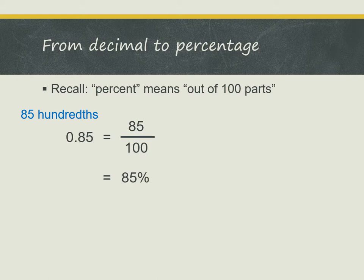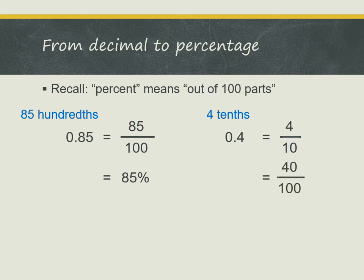Let's look at another example: 0.4. We can say 0.4 as 4 tenths. And 4 tenths, when we write it as a fraction, it's 4 out of 10. But percentage is out of 100 parts, so we need to change this to an equivalent fraction with 100 in the denominator. And we get 40 out of 100. Then we can write it as a percentage: 40%.